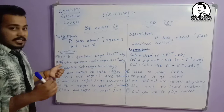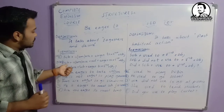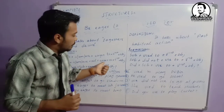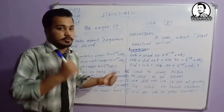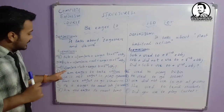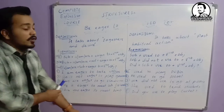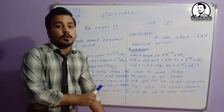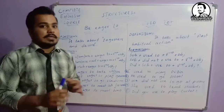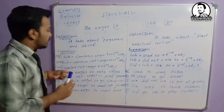For the negative sentence: subject plus is/am/are plus not plus eager to plus first form plus object. For the interrogative: is/am/are plus subject plus eager to plus first form plus object, question mark. I believe it will take time for beginners especially to understand this formation.